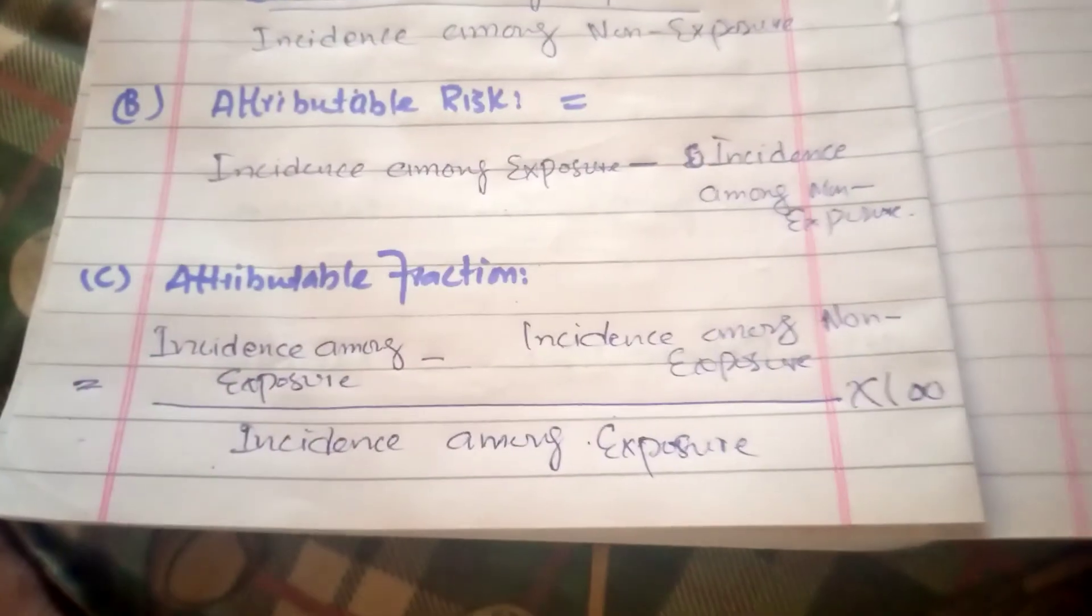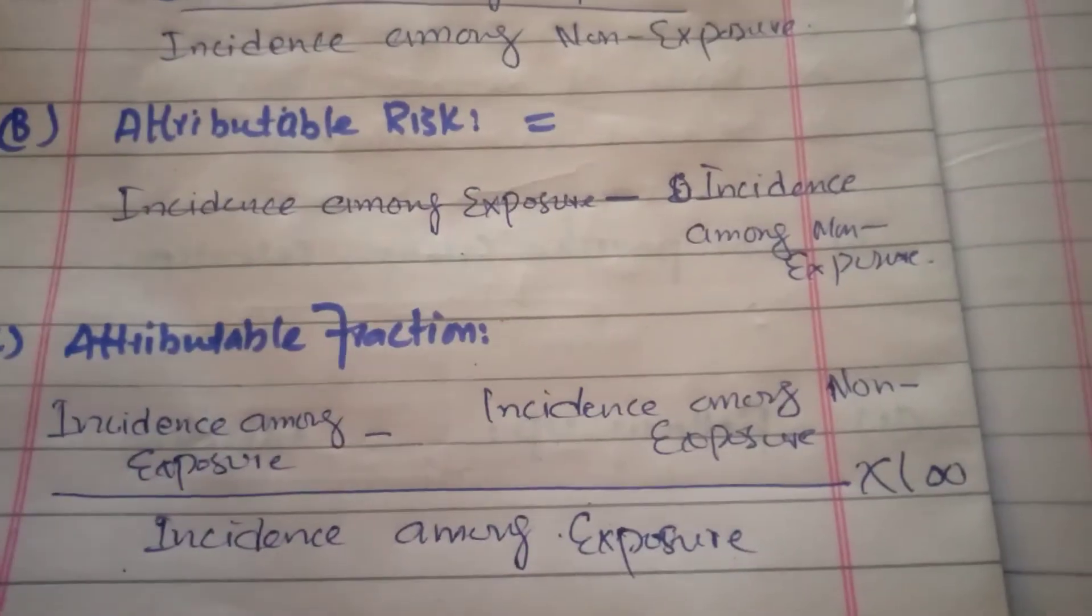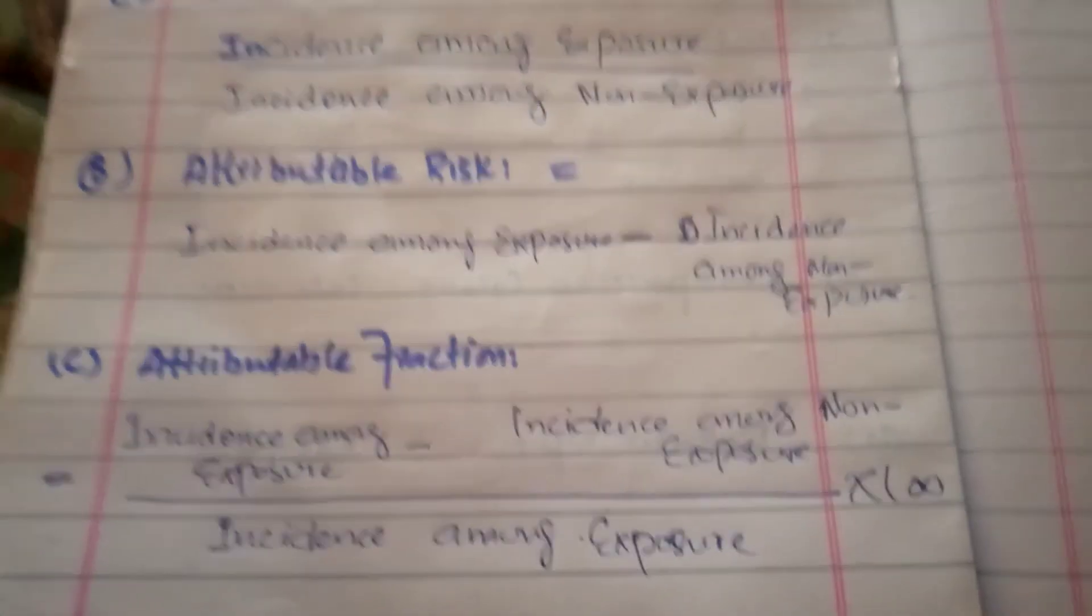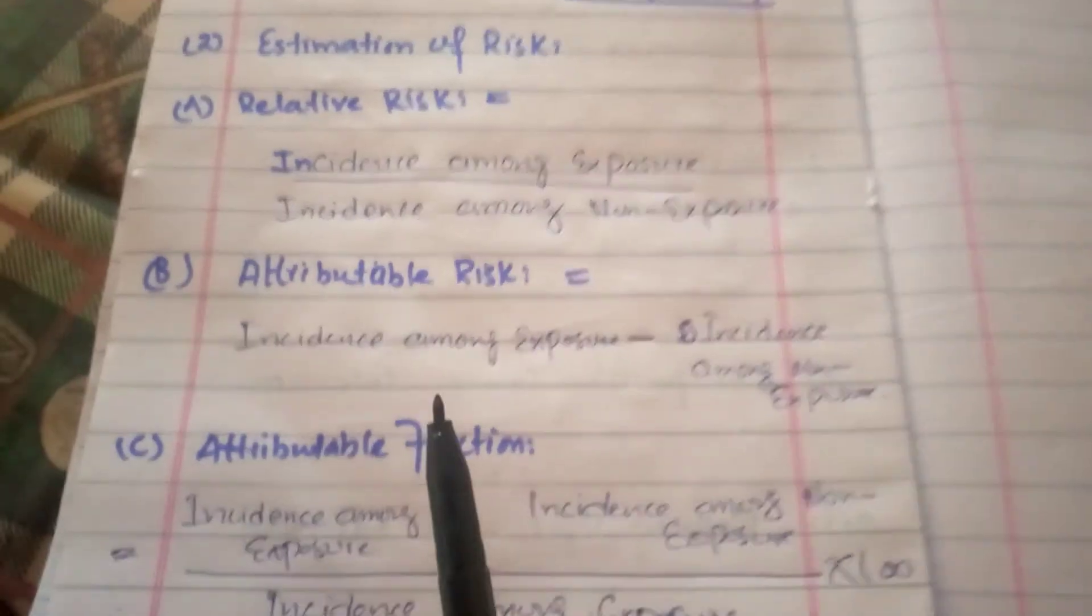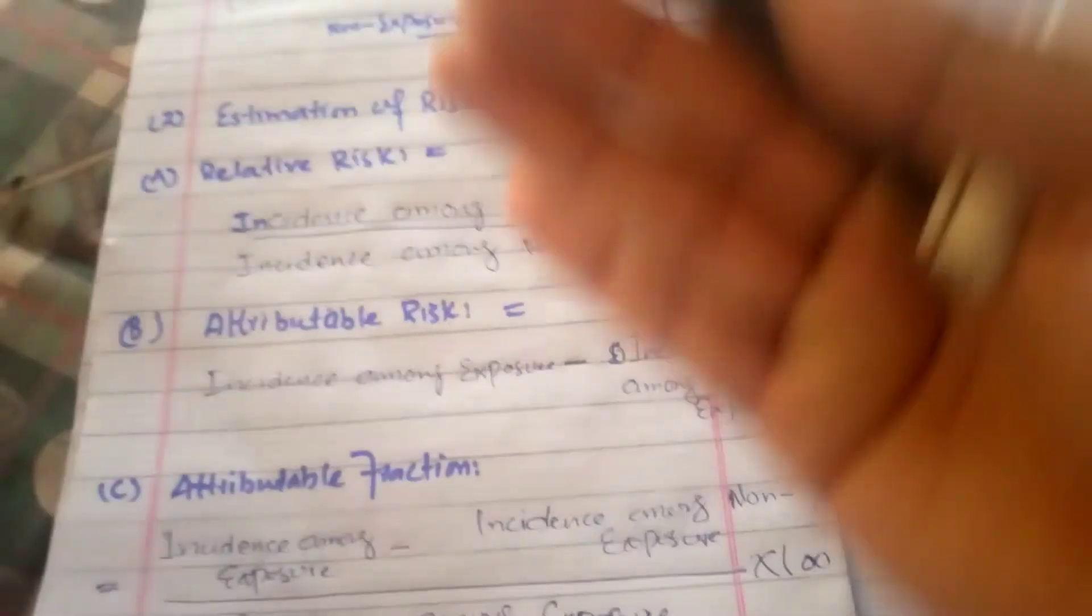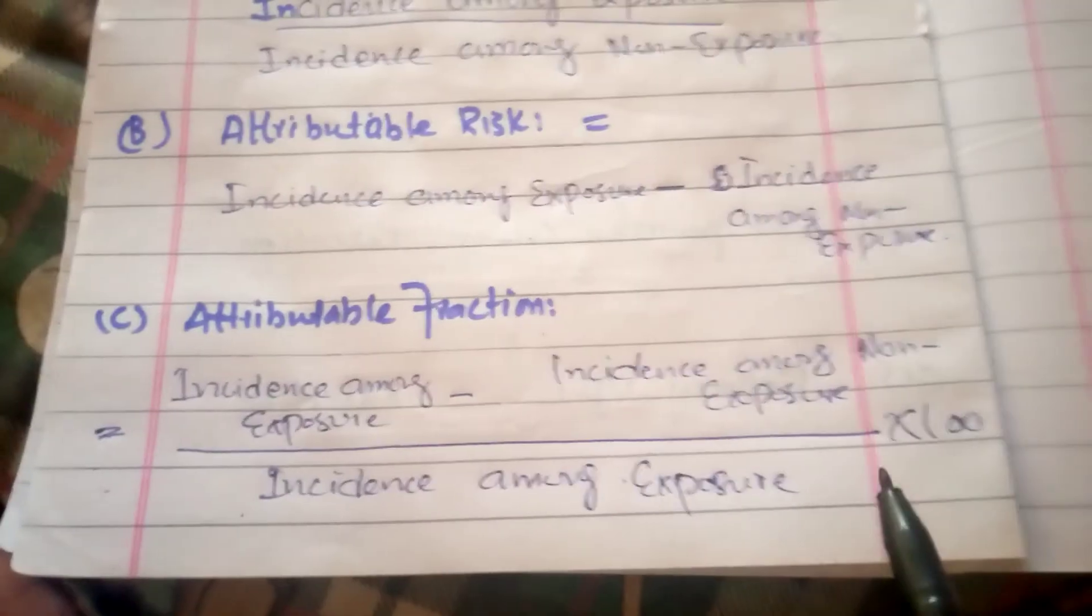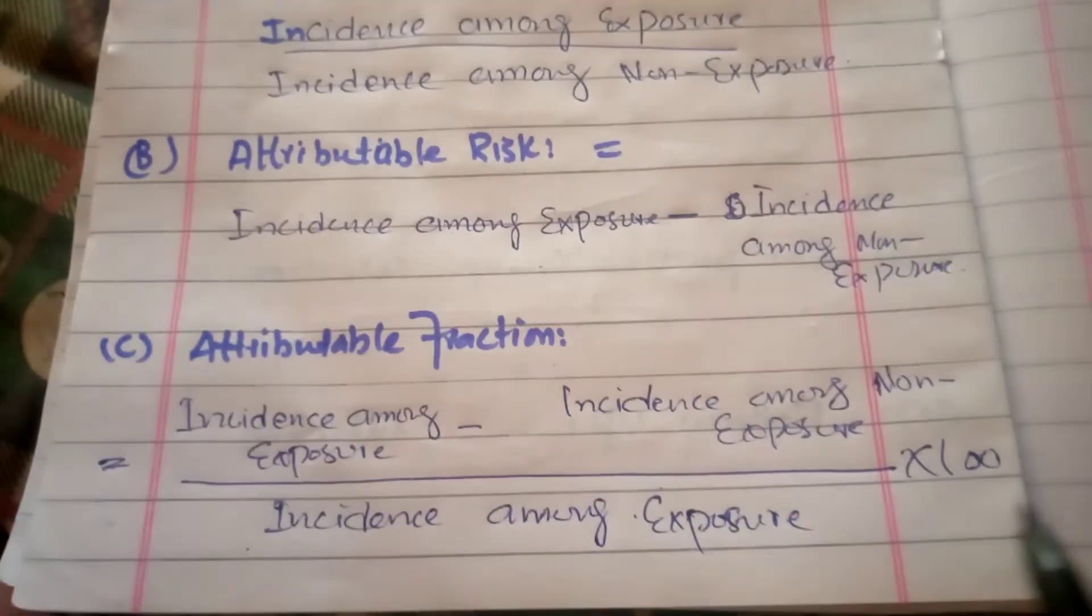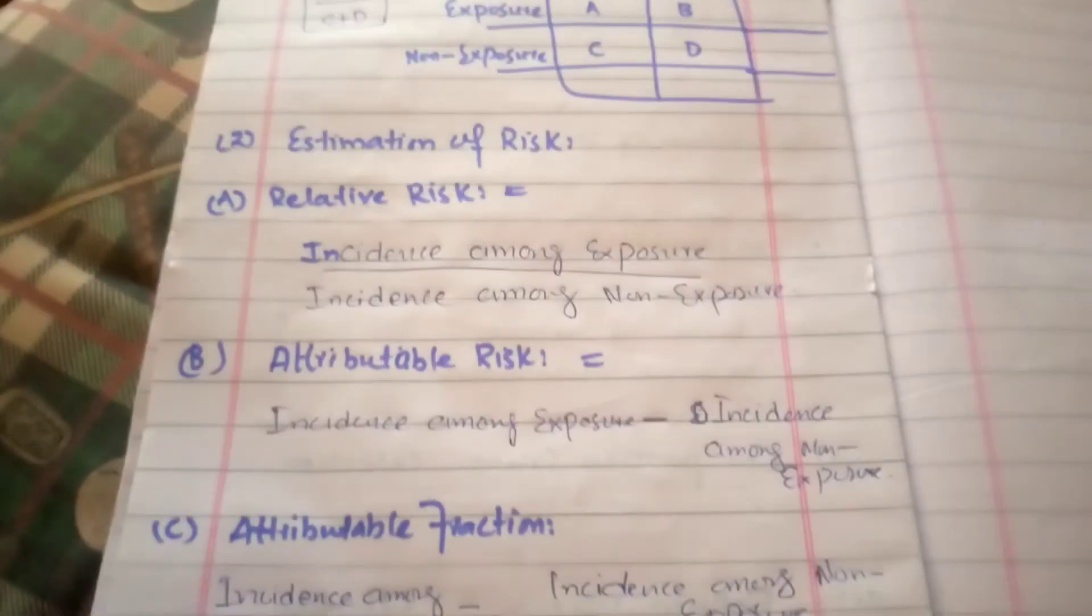This attributable fraction is a very important formula, important factor from which we can determine how much a factor contributes to the disease. If a factor is 90% responsible for disease, for example smoking and cancer - smoking causes 90% of lung cancer. If smoking is controlled, 90% of lung cancer can be easily prevented.